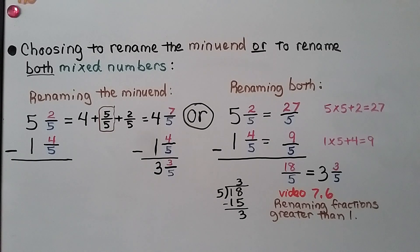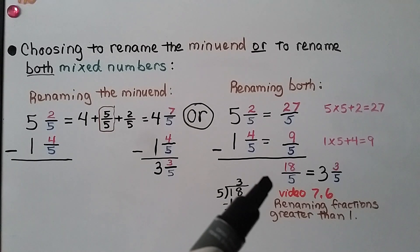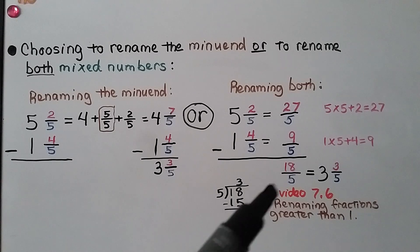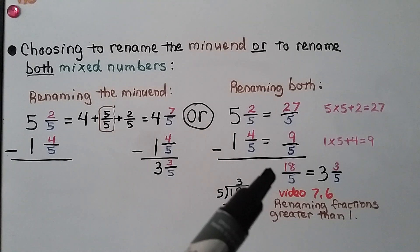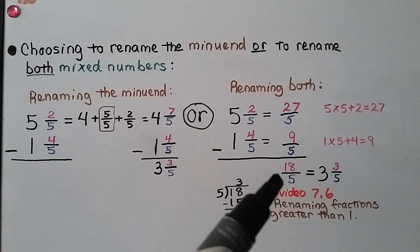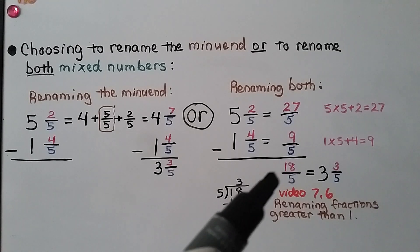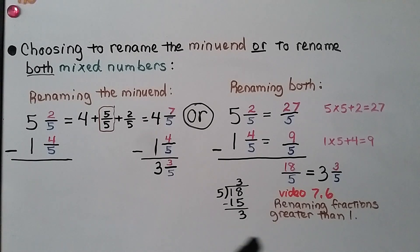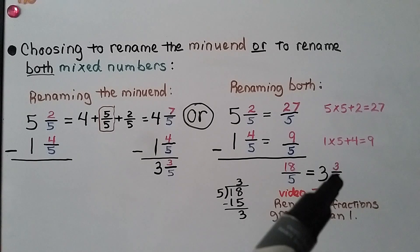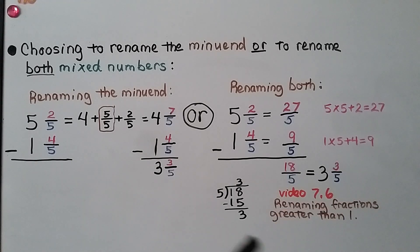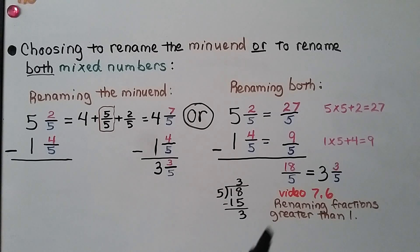We can simplify fractions greater than 1, as we learned in video 7.6, by treating it as a division problem. 18 divided by 5: the quotient is 3 — that's our whole number — the remainder is 3 — that's our numerator — and the divisor is 5 — that's our denominator. We get 3 and 3 fifths. If that was confusing, check the description to watch video 7.6.